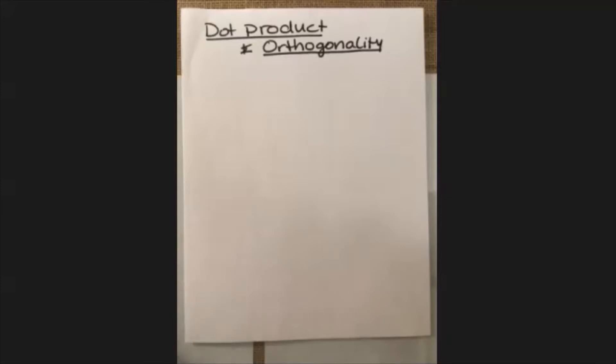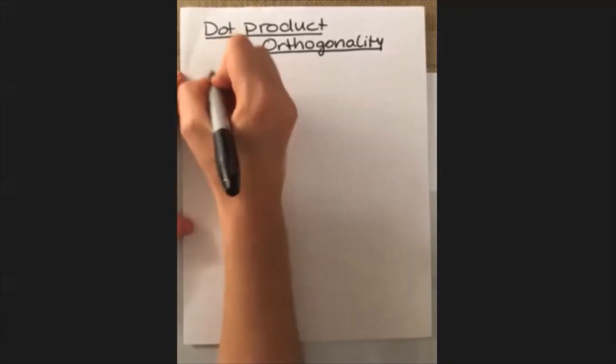In this video we will discuss some examples using the dot product and orthogonality. So I want to start out with just a quick definition of the dot product and then I'll show some examples for that.